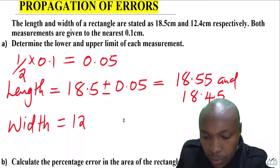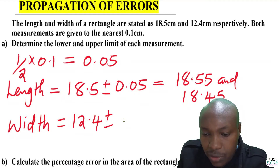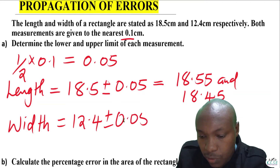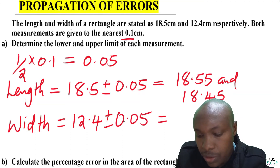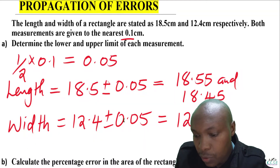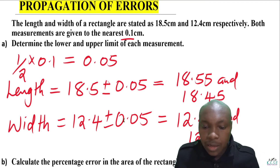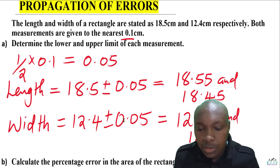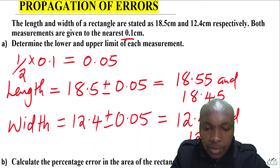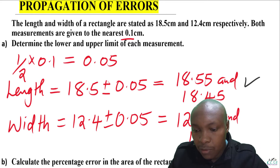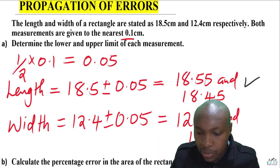For the width, the measurement is 12.4. Since it is also given to the nearest 0.1, the error is the same: 0.05. So the limits will be 12.45 as the upper and 12.35 as the lower — you simply add and subtract 0.05. To summarize: for the length, upper is 18.55 and lower is 18.45; for the width, upper is 12.45 and lower is 12.35.